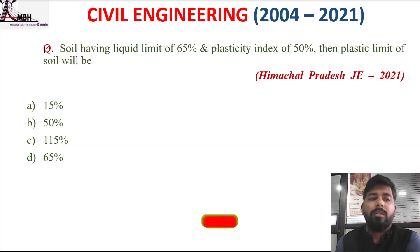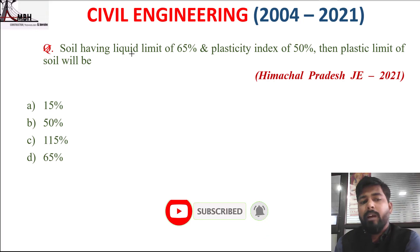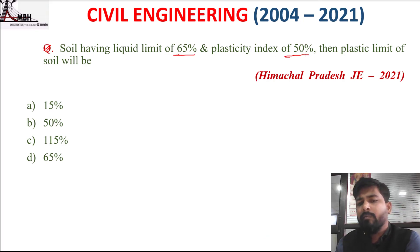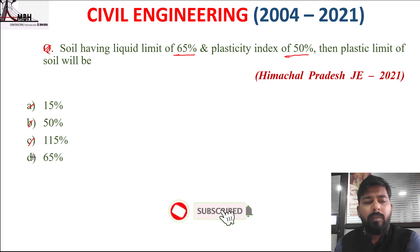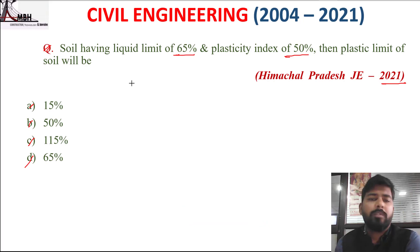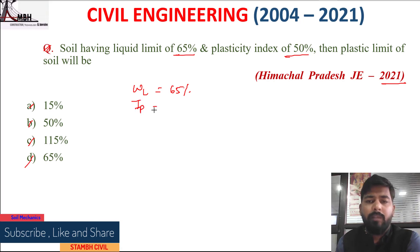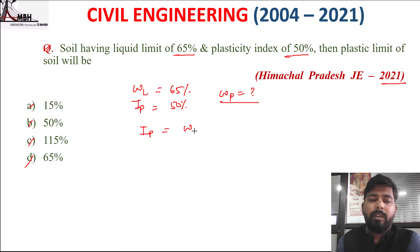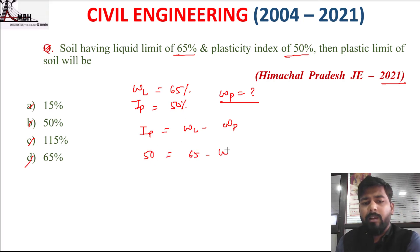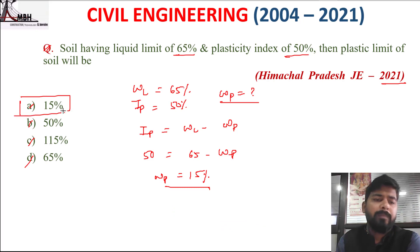Next question: a soil having a liquid limit of 65% and plasticity index of 50%, then the plastic limit of this soil will be: A 15%, B 50%, C 115%, D 65%. Given LL = 65% and PI = 50%, plastic limit WP = LL − PI = 65 − 50 = 15%. The correct option is A, that is 15%.